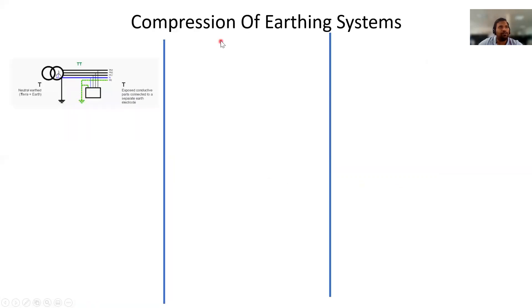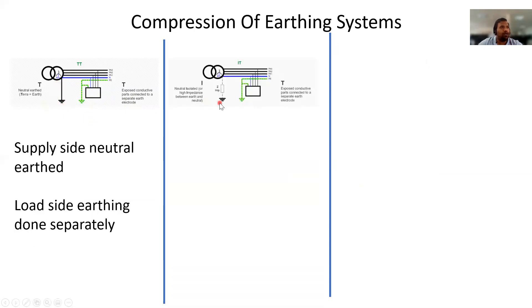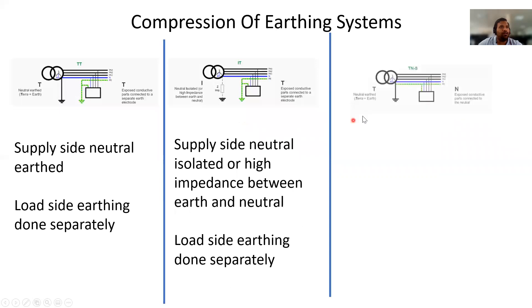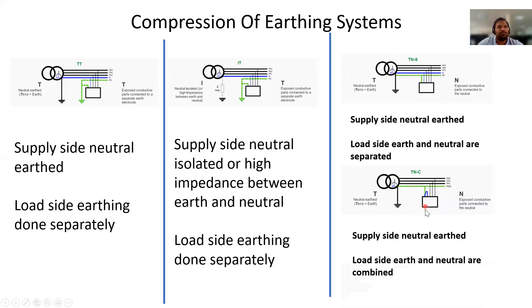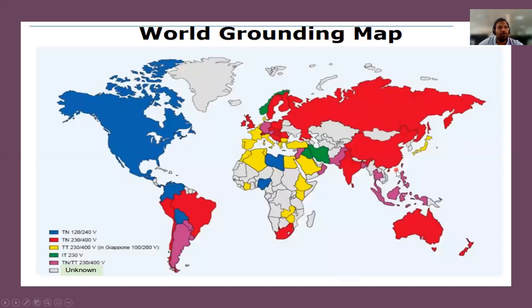A quick comparison between earthing systems: In the TT system, both the supply-side earth and load-side earth are separate. In the IT system, only the load side is earthed. In the TNS system, the supply side is earthed and a separate conductor runs to the load side with neutral and earth separated. In the TNC system, the supply side is earthed and the load-side neutral and earth are combined.